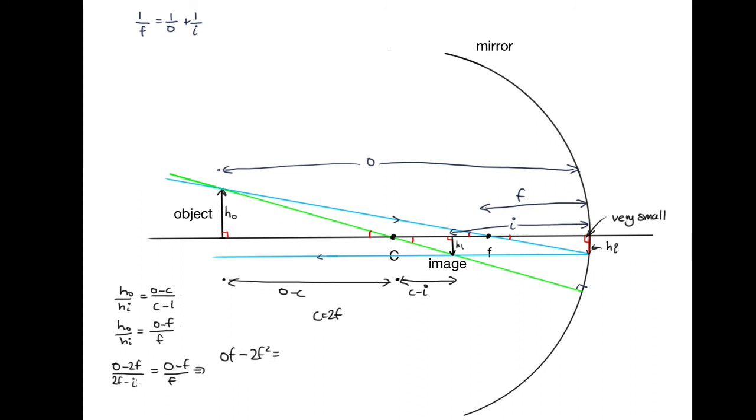we're multiplying this by this now. So we've got 2F O, and then we've got minus I O. And then we've got minus 2F squared. And then we've got plus F I.